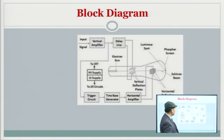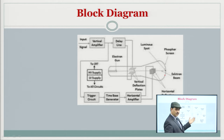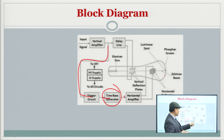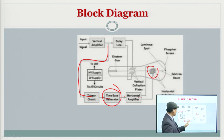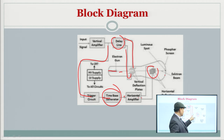Here is another representation of the block diagram of the cathode ray oscilloscope — a similar one in black and white. You can see the luminous spot on the phosphorous screen where the electron beam strikes. The trigger circuit is present, and the time-based generator helps you select the scale. Through the horizontal amplifier, input is provided to the horizontal plates, while the vertical plates receive input through the delay line. The electron gun emits the electrons.